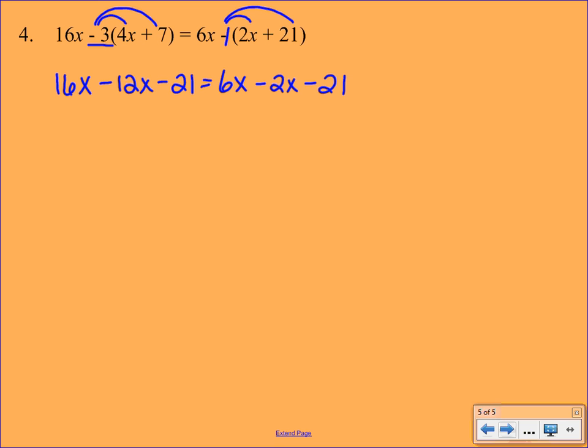So we've finished distributing. Now we have to combine like terms on both sides of the equation. So on the right-hand side, we're going to put the x terms together to make 4x. We're going to bring down the minus 21. And likewise, on the right-hand side, we're going to put together the 6x and the minus 2x to get 4x. And bring down the minus 21.